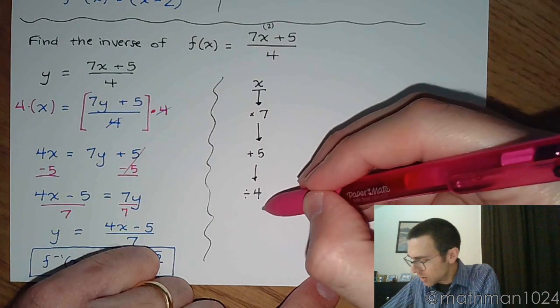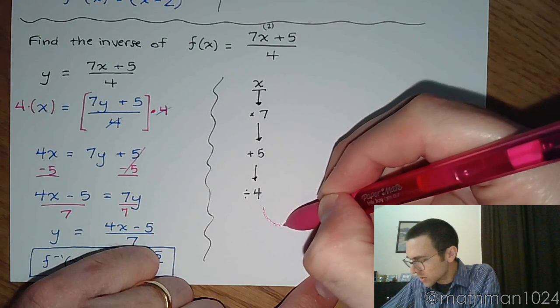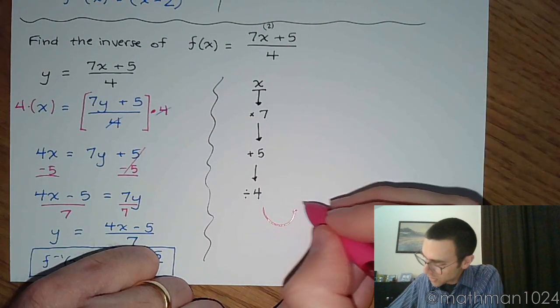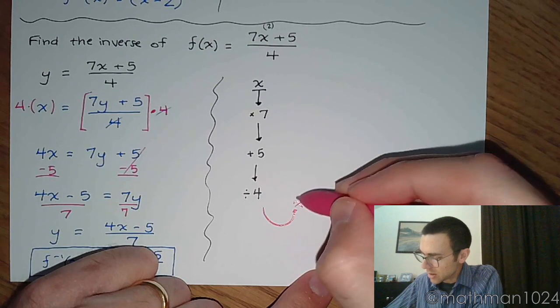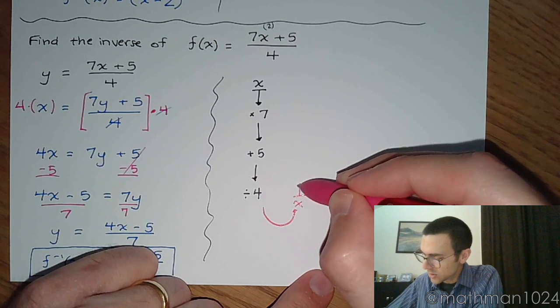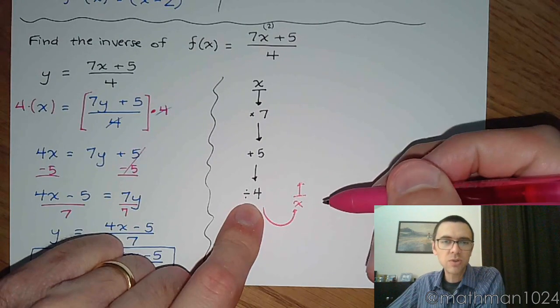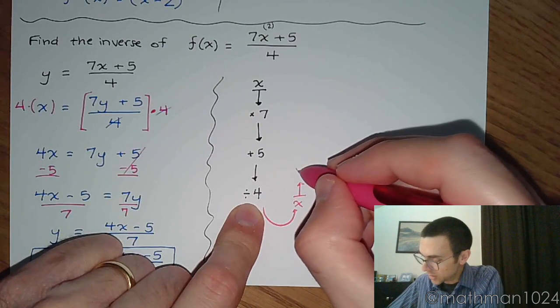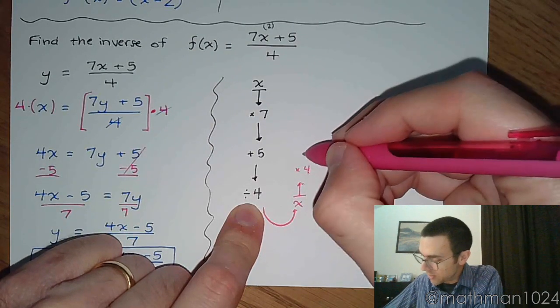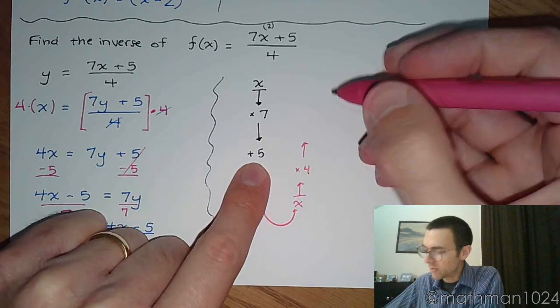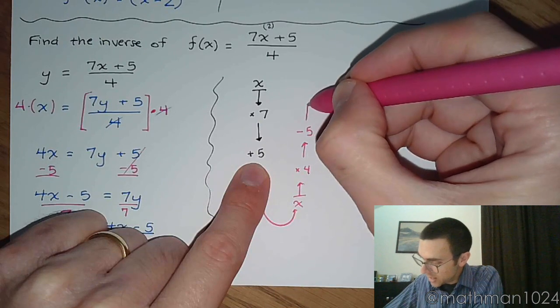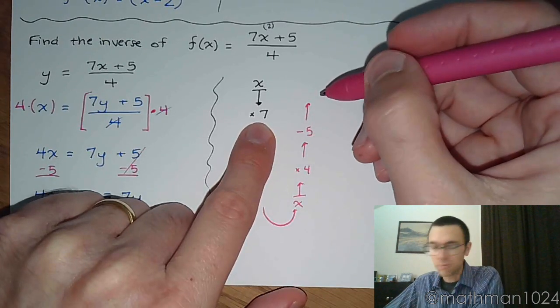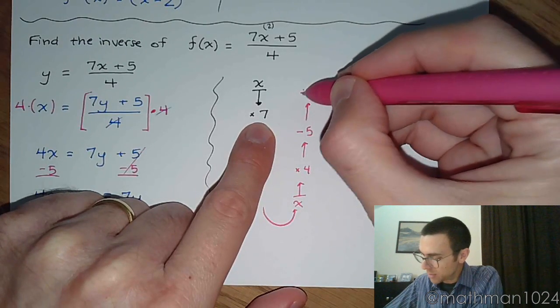Okay? So if you start with x, what do you do first? Well, you have to undo division by 4, so that means you multiply times 4. And then, instead of adding 5, you do the inverse, which is subtracting 5. And then, you do the inverse of multiplying times 7, so that's divide by 7. So this is the step. This is the pattern that you take to find the inverse.